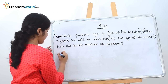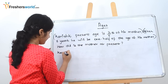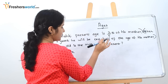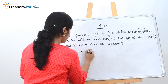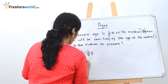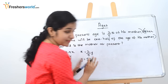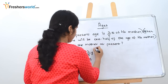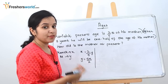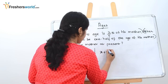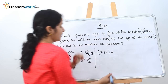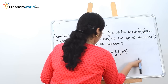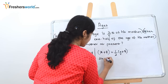Let's write the equations. Let Kanish's age be x and his mother's age be y. From the first part: Kanish's present age is 2/5 of his mother's, so x = (2/5)y, which means y = 5x/2. Leave it for now. Next, after 8 years — 'after' means we add — Kanish's age will be (x + 8) and his mother's age will be (y + 8), and he will be half her age. So (x + 8) = (1/2)(y + 8).